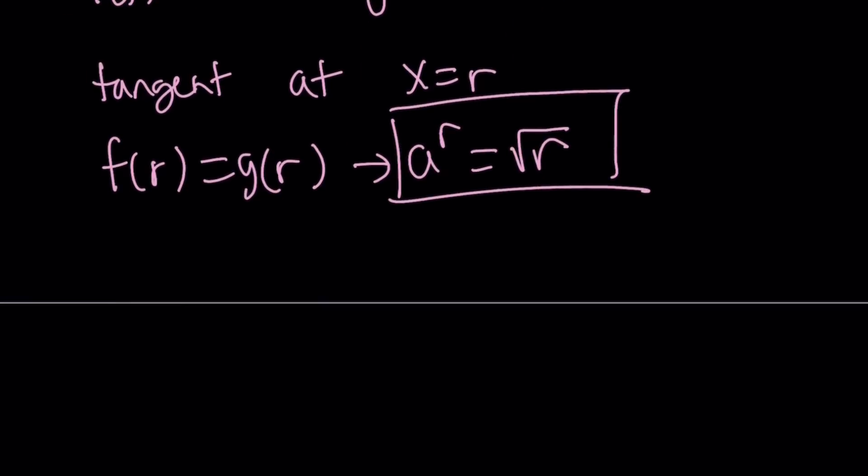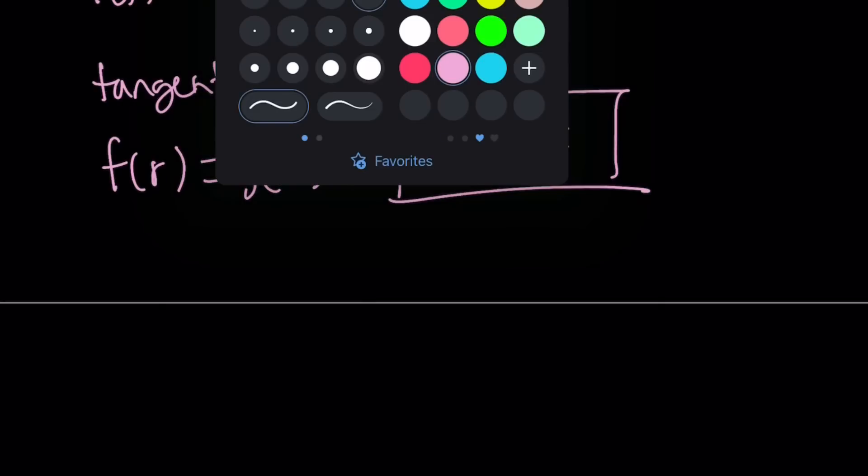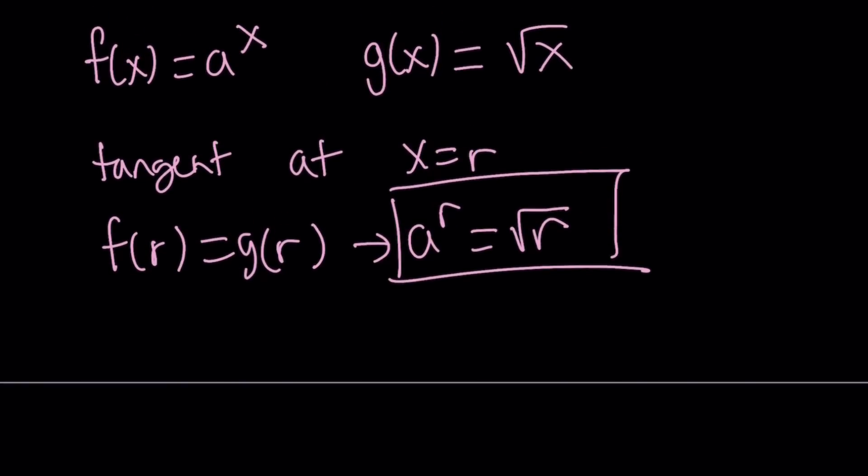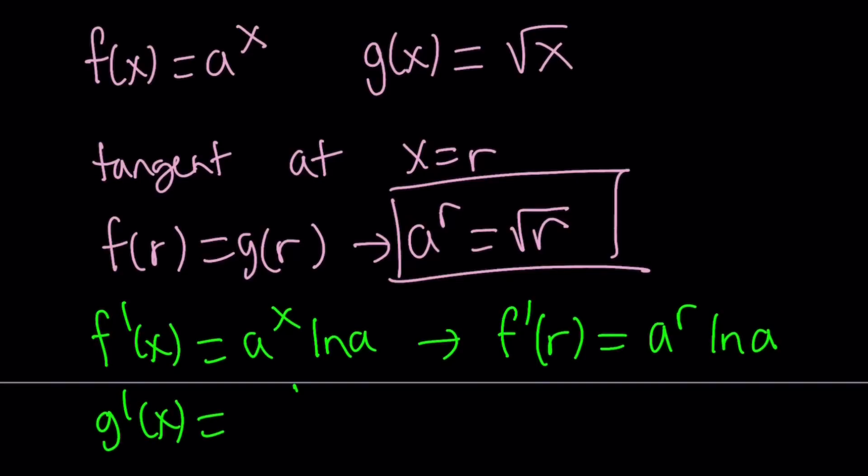And we're going to use substitution here. So it's going to be interesting, because we have two unknowns. Now, the second equation is going to come from the derivatives. Since two functions are tangent, that means they have a common tangent at that point. So let's go ahead and differentiate f. We get a to the power x ln a. And if we replace x with r, that gives us a to the power r ln a. Let's differentiate g. That's going to give us 1 over 2 times the square root of x. And then replace x with r in the derivative. g prime at r is going to be 1 over 2 times the square root of r.